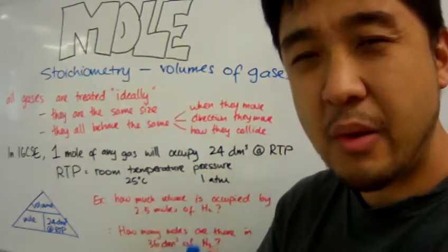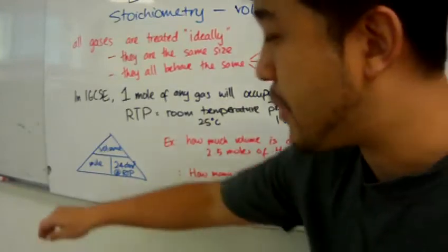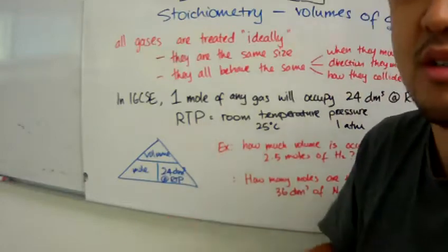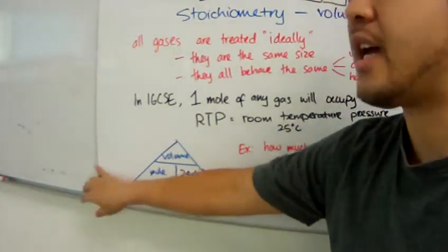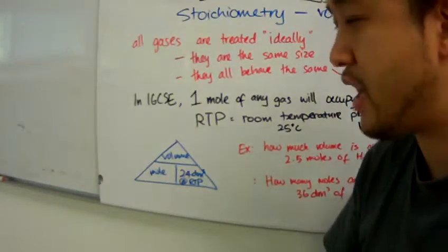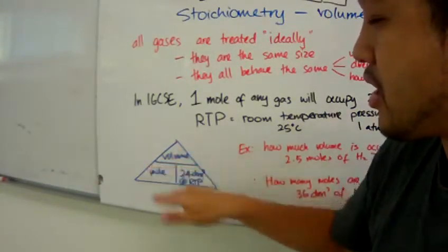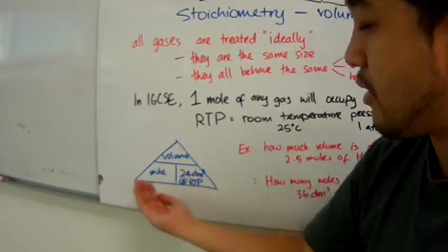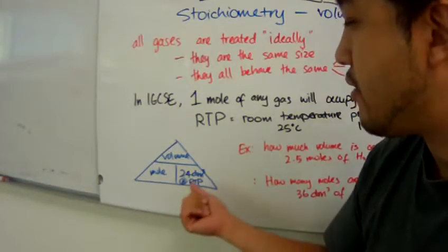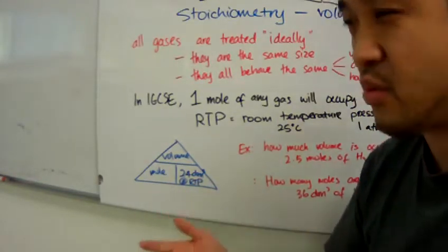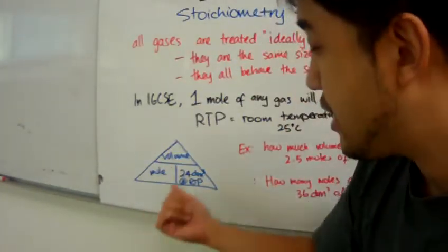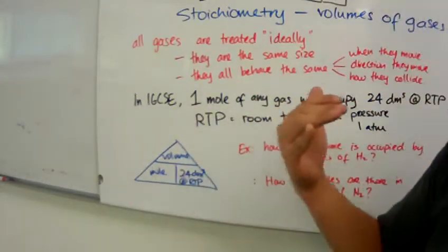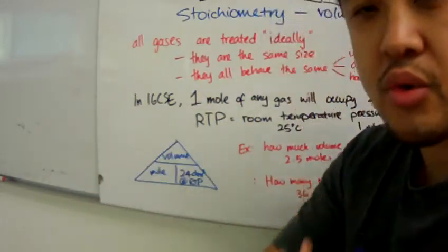So now that we have those basic concepts down, let's talk about the conversion triangle involving volume for gases. Again, like the previous conversion triangle, we have volume at the denominator, the mole on the left side of the triangle, left bottom corner of the triangle and the molar volume in this case will be 24 cubic decimetres at RTP at the bottom right corner. And we use this conversion to convert between moles to volumes.